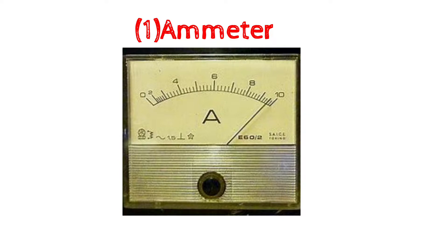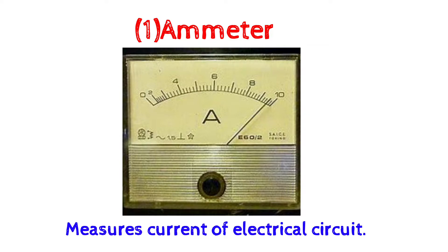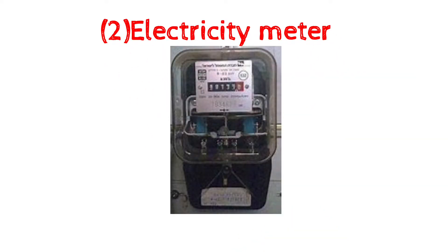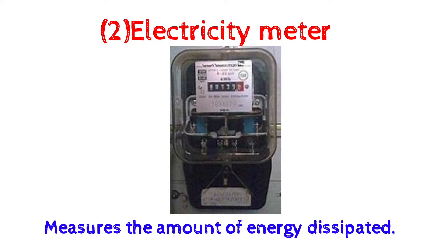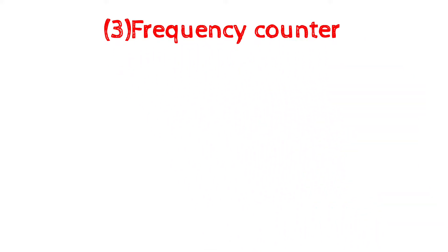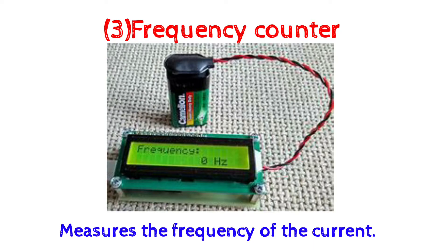Welcome to my channel Electrical Globe. A list of 30 measuring instruments are given in this video, so let's get started. 1. Ammeter: measures current of an electrical circuit. 2. Electricity meter: measures the amount of energy dissipated. 3. Frequency counter: measures...